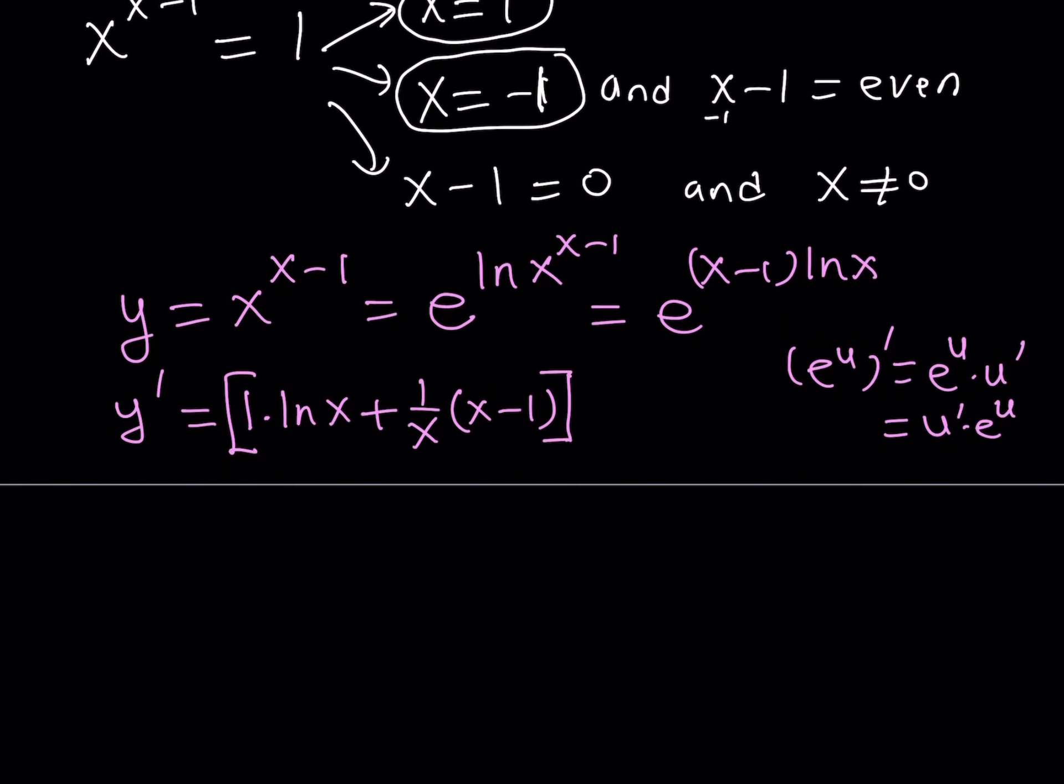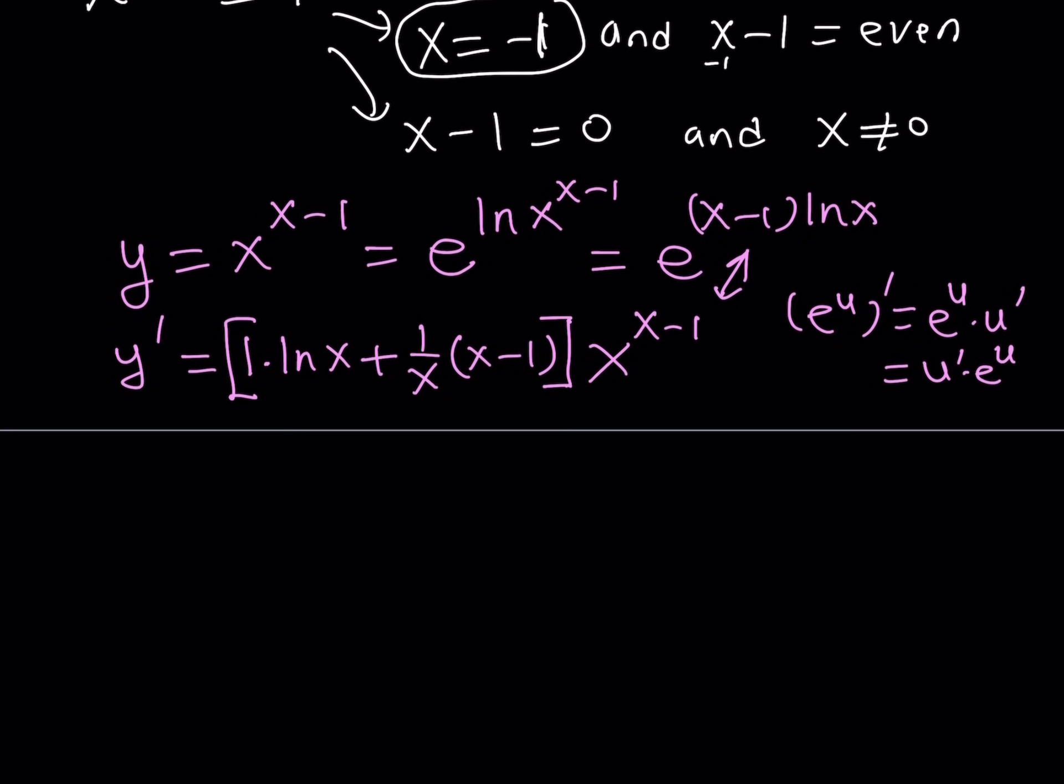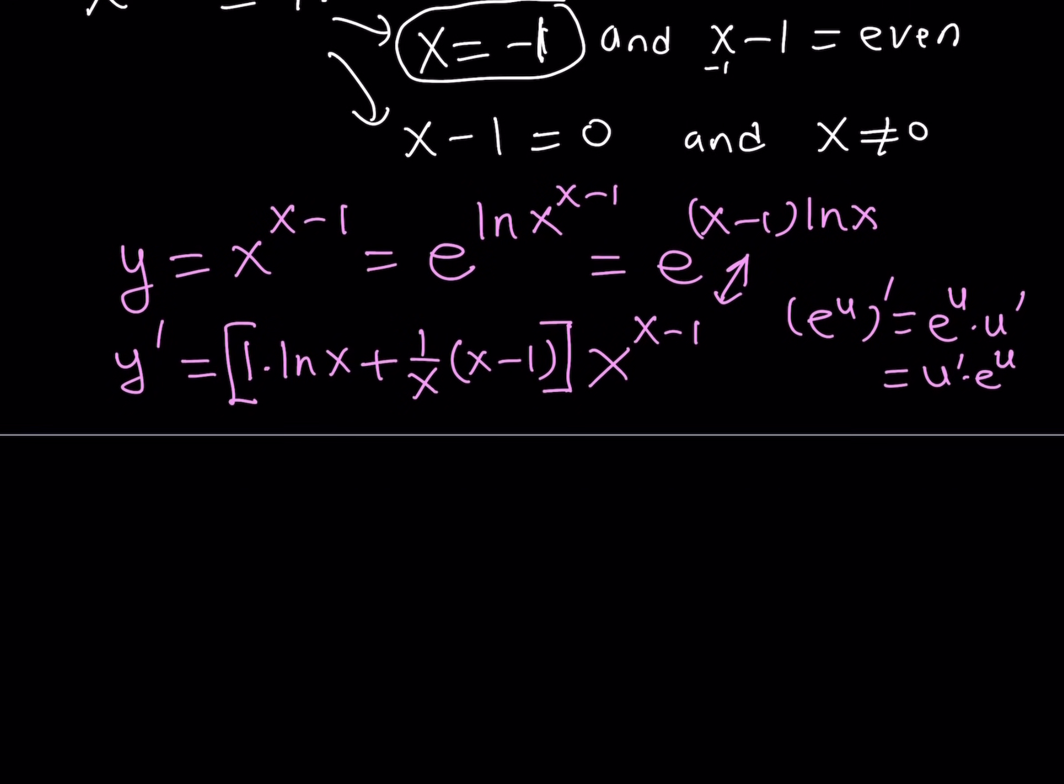So this just gives us u prime, which is the derivative of the inside, as mentioned in the chain rule. And this will be multiplied by e to the power of that, but I can also write it as x to the power x minus 1, which is the same as this one.